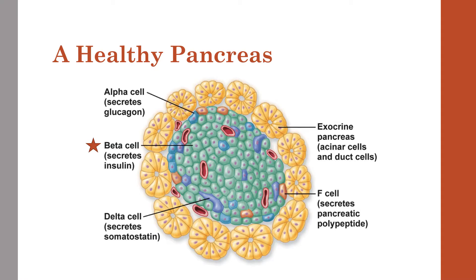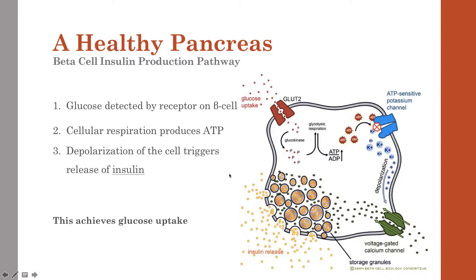The pancreas also functions as an exocrine gland. The pancreas produces enzymatic secretions to break down food. The structure where secretion occurs is called the islet of the cell. You can see these islets over here. We have to learn about the beta cell insulin production pathway of a healthy pancreas in order to understand when something goes wrong.